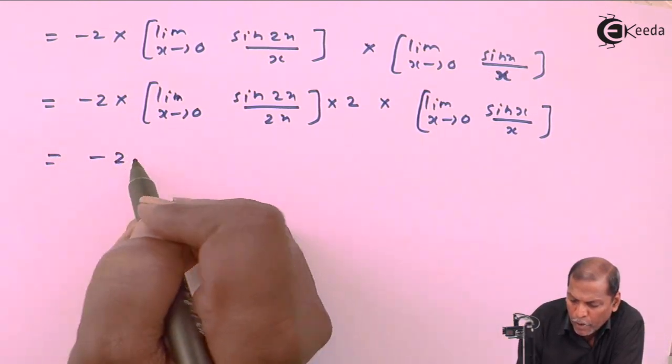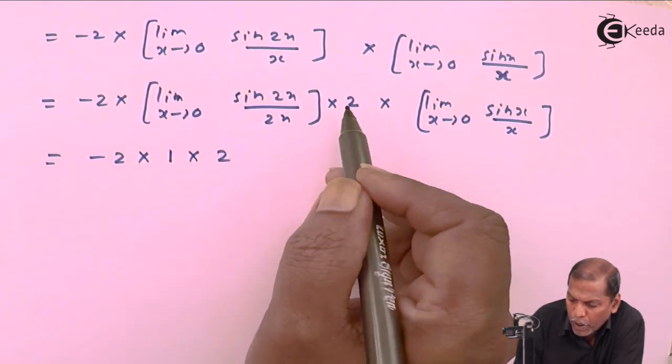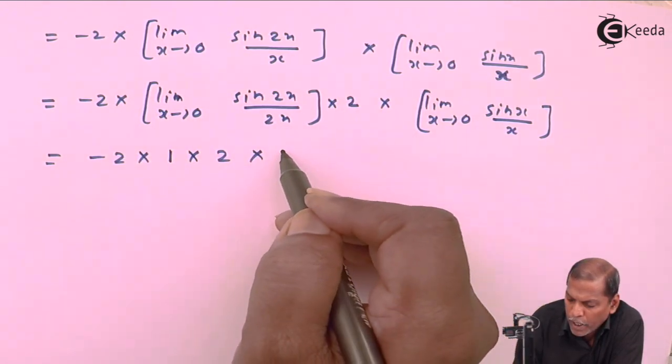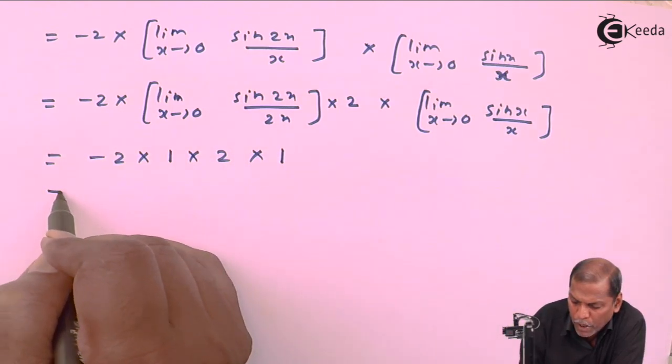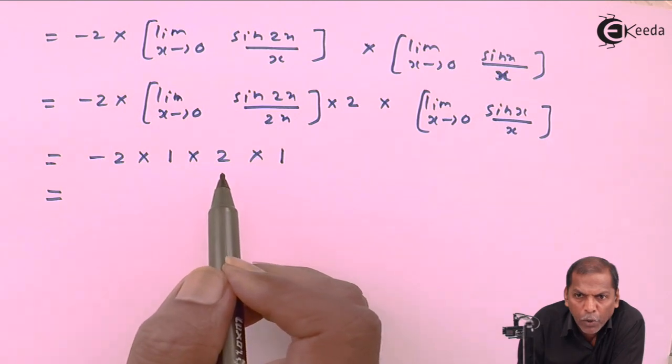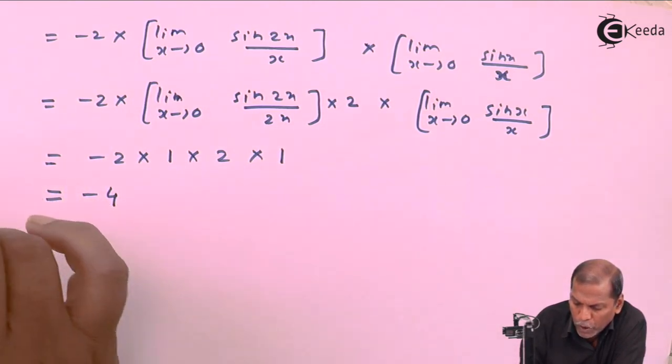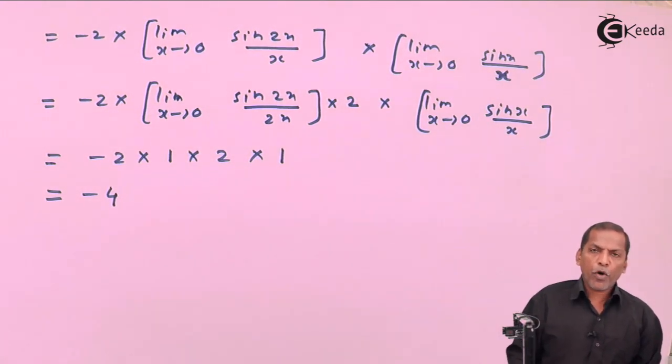So that equals minus 2 into first bracket gives answer 1 into 2, and that last bracket also gives answer 1. So finally minus 2 into 1 into 2 into 1, so that gives minus 4. So this is the required solution for the given problem. Thank you.